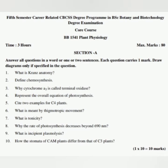Question 5: Cite two examples for C4 plants. Question 6: What is meant by thigmotropic movement? Question 7: What is tonicity? Question 8: Why the rate of photosynthesis decreases beyond 690 nanometers? Question 9: What is incipient plasmolysis? Question 10: How the stomata of CAM plants differ from that of C3 plants?